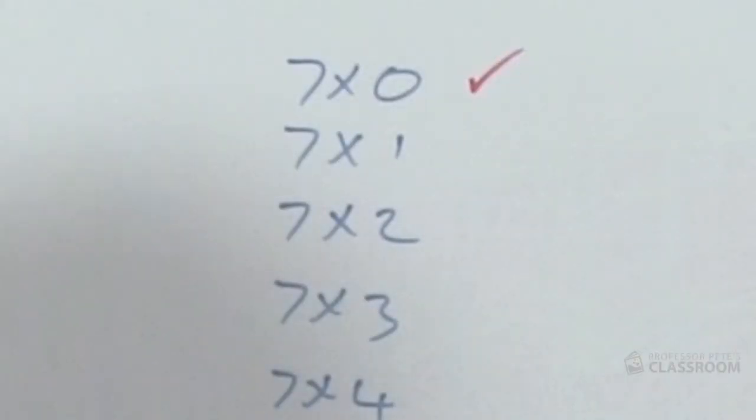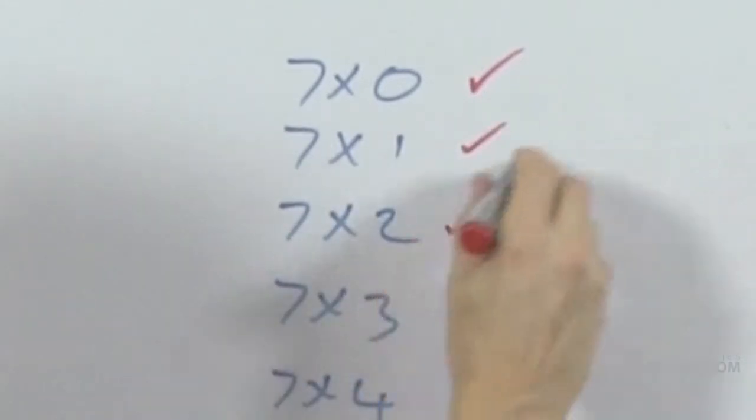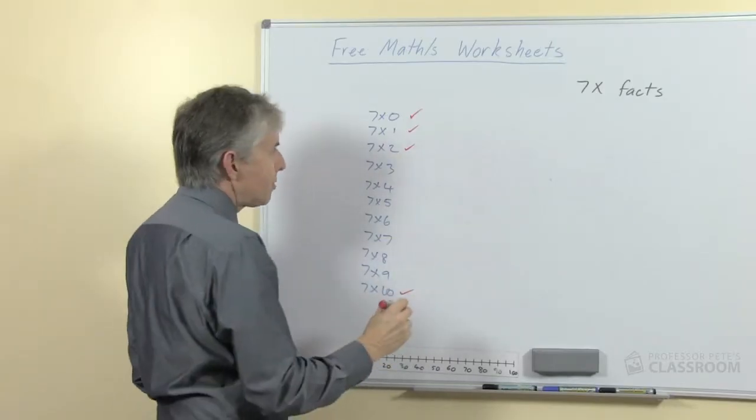Well seven zeroes is nice and easy, that's going to be zero. Seven ones are seven, seven twos are fourteen, seven tens are seventy.